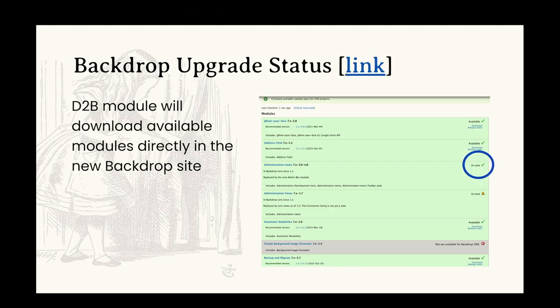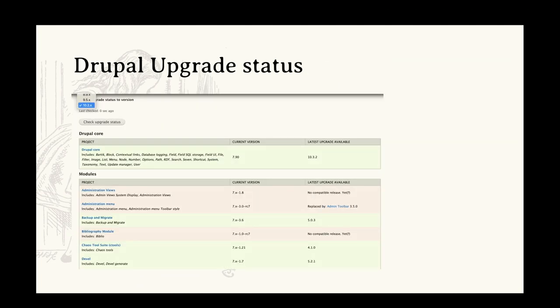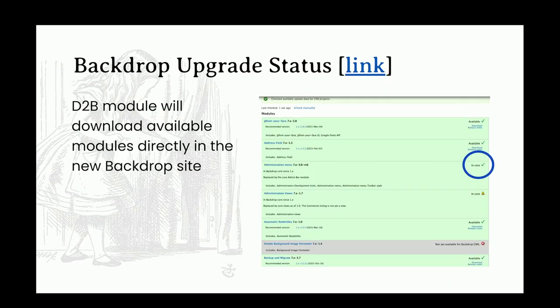Drupal Upgrade Status and Backdrop Upgrade Status are two modules that are very important when making decisions about your migration, because moving things from one module to another or replacing modules is a big undertaking. All three modules are put on your Drupal 7 site — they're not on your new system. They can be added to the live site without damaging anything because they're just reporting. In Backdrop, when you do your check, you can see that some modules are automatically included in core, which lowers the number of modules you need to install in the new instance.